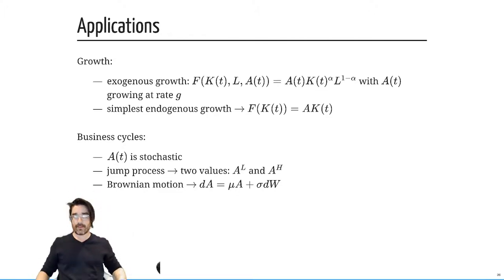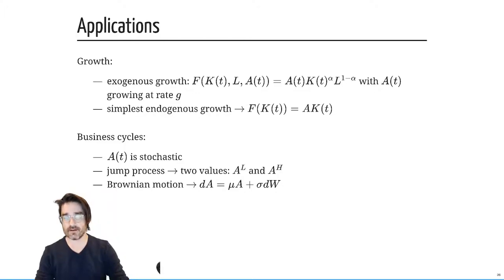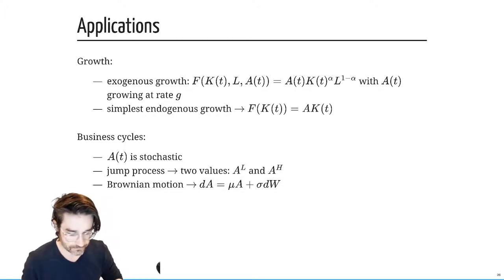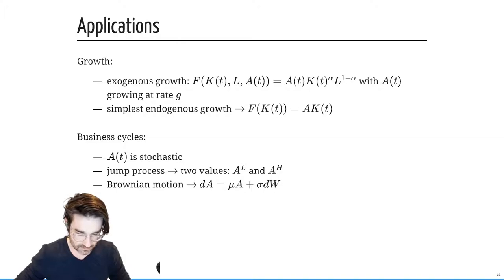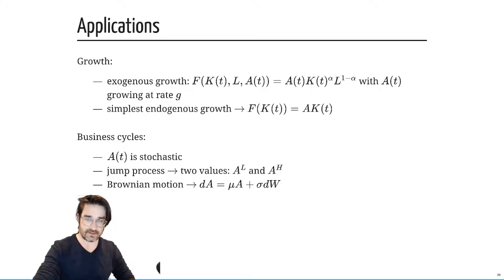The last slide gives an idea of different things you can do. The second item alludes to the AK model. There is a model you can write down with a production function without labor — basically a totally automated economy. It's called the AK model because the production function is F equals A times K. It's kind of like the case where alpha equals one.